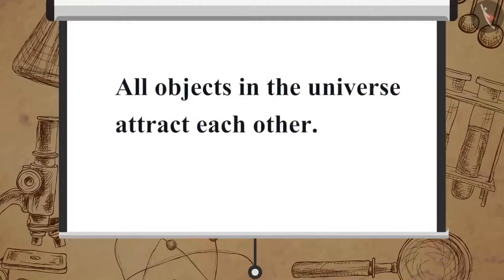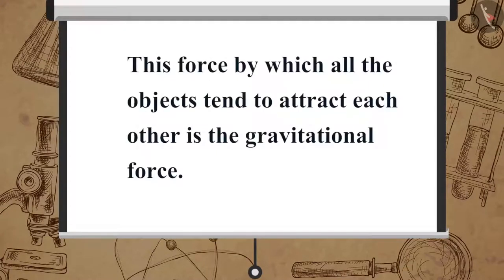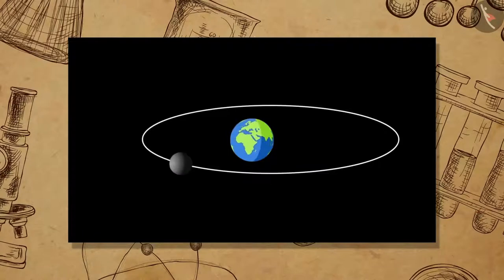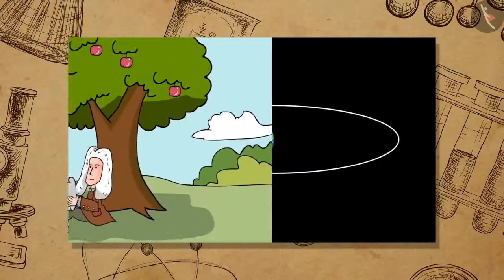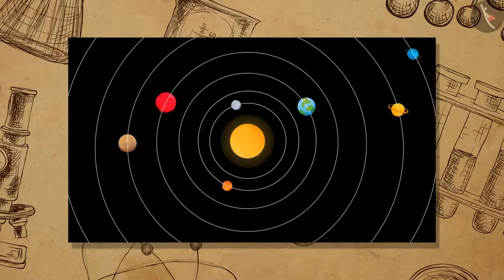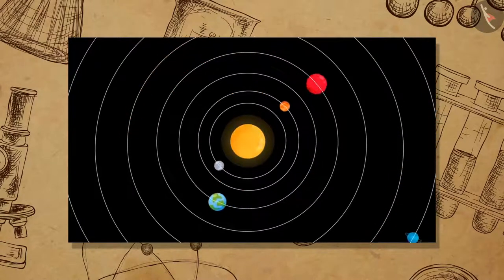Newton concluded that all objects in the universe attract each other. This force by which all the objects tend to attract each other is the gravitational force. Gravitational force is responsible for the motion of the moon around the earth, falling of objects on the surface of the earth, and for motions of the planets around the sun.